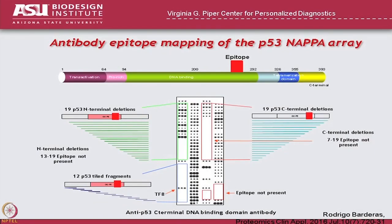This indicates that you can map in a higher-throughput version where binding occurs. Here's an example of an antibody binding to the p53 protein — we did a series of N-terminal deletions and you can see it binds to all of them until it gets to here. We did C-terminal deletions and again it binds here then you don't see it. We did fragments that walk across the protein, and of course it binds to just that one.